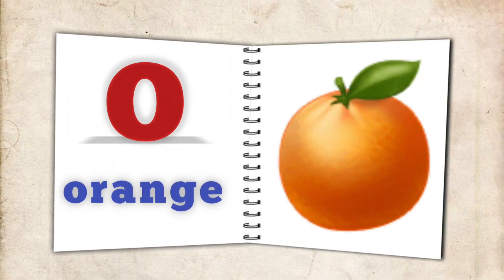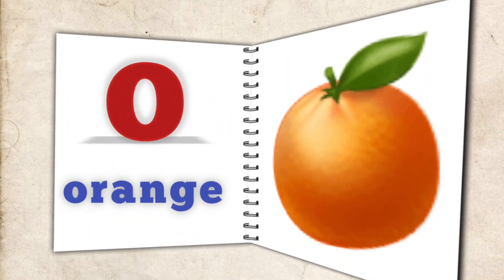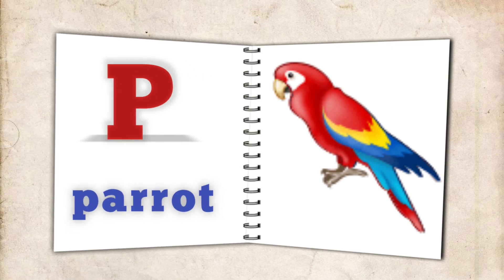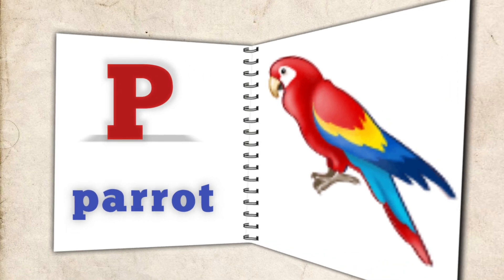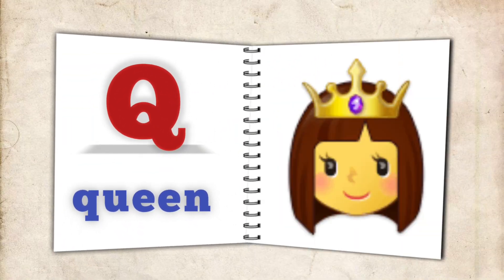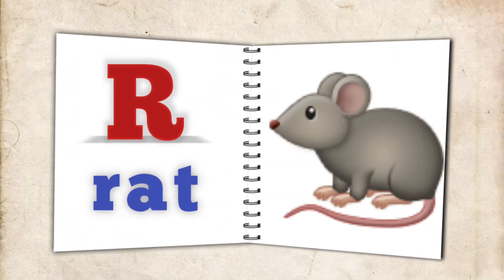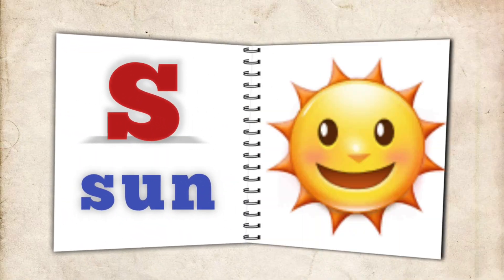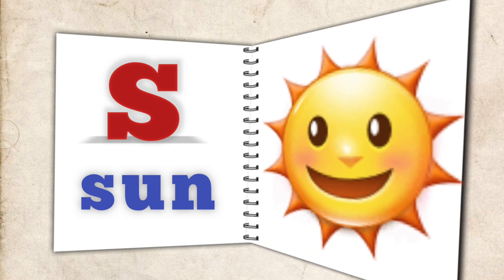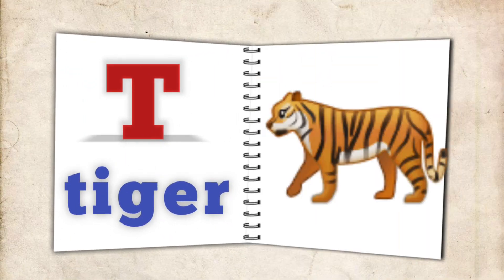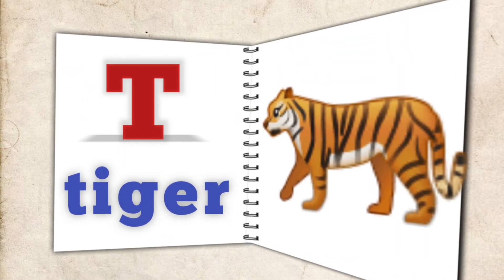O for orange, P for parrot, Q for queen, R for rat, S for sun.